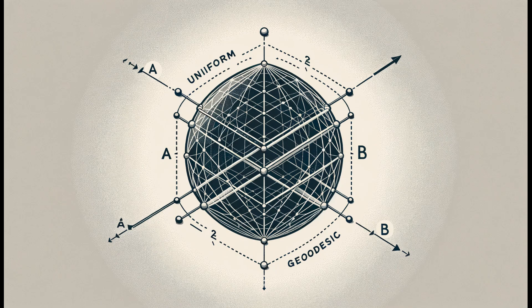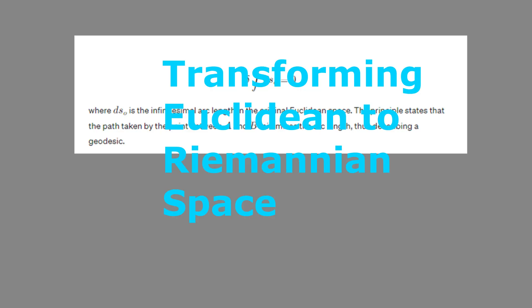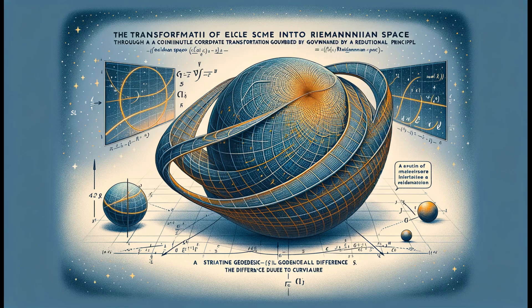The transformation of Euclidean space into Riemannian space involves a continuous coordinate transformation governed by a variational principle. This principle states that the path followed by a point between two locations a and b minimizes the arc length and thus defines a geodesic. In Euclidean space, a geodesic is simply a straight line — the shortest path between two points. When this Euclidean space is transformed into a curved Riemannian space, the concept of a geodesic is preserved, but the nature of these geodesics changes due to the curvature of the space.